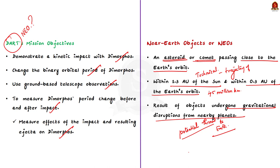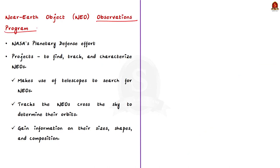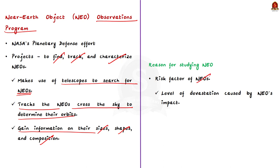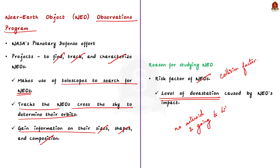The key element of NASA's planetary defense effort is the Near-Earth Object Observations Program, composed of projects to find, track, and characterize near-earth objects. It sponsors projects that use telescopes around the world to search for near-earth objects, track them across the sky to determine their orbits, and gain information on their sizes, shapes, and composition. These objects are given such importance due to the level of devastation a near-earth object impact would cause, and thus they should be the focus of global search efforts.